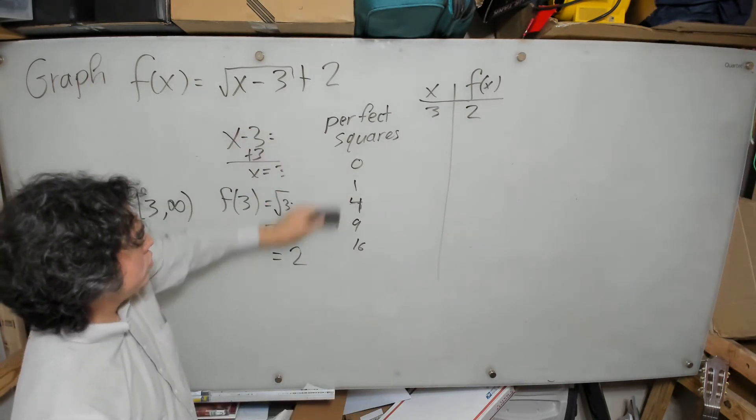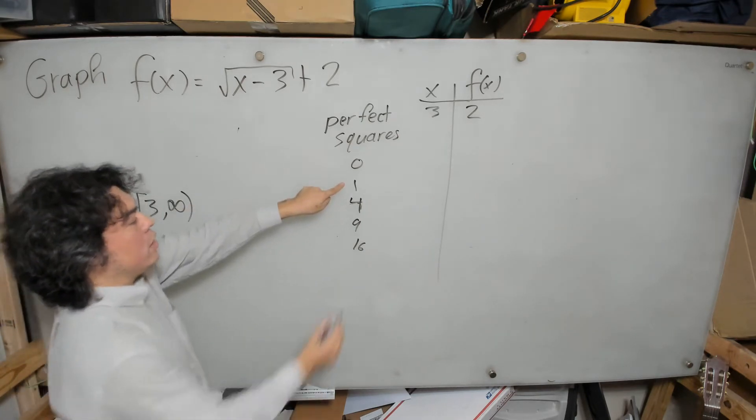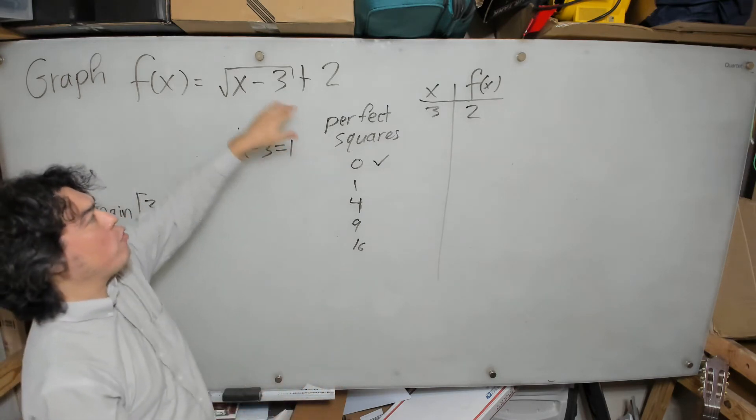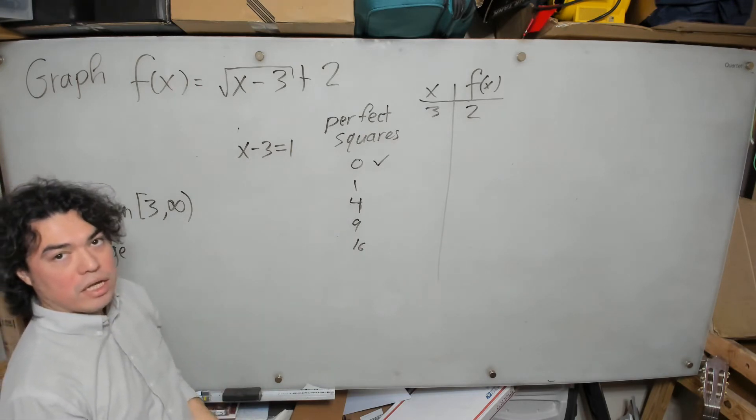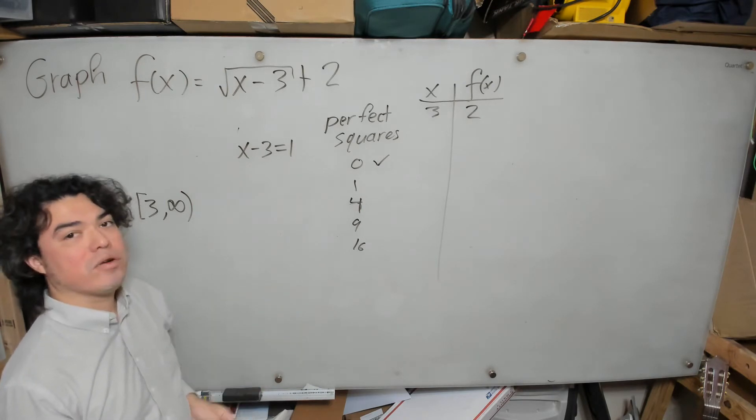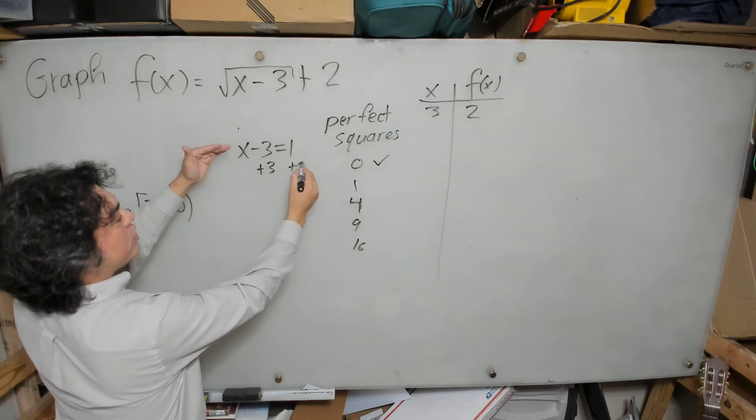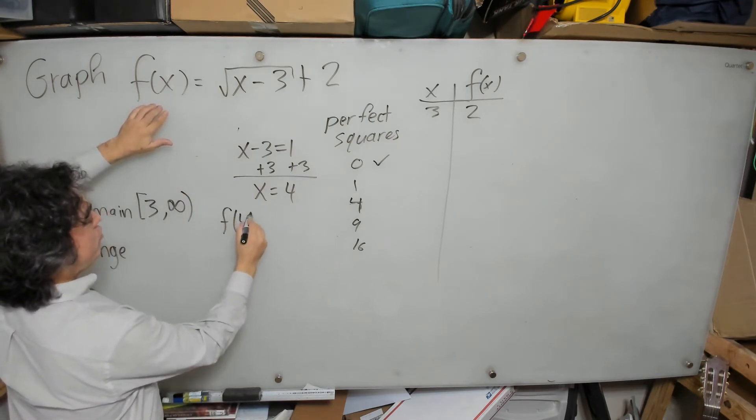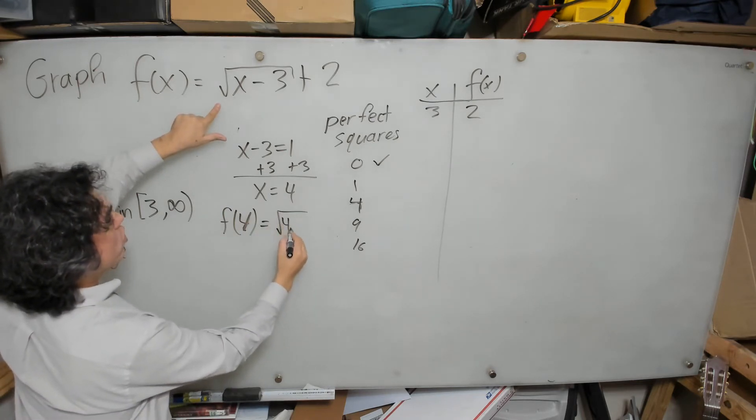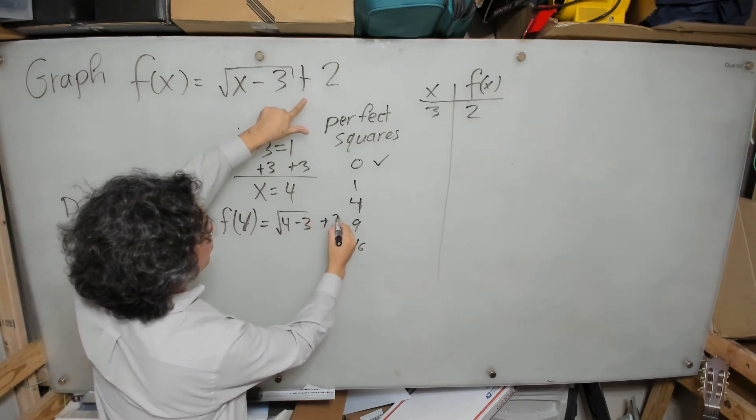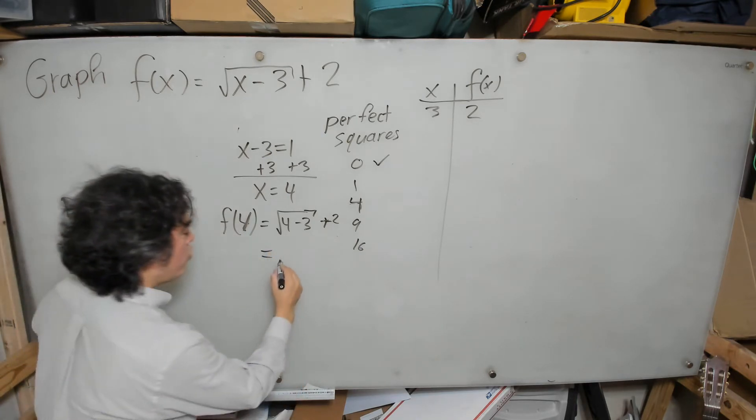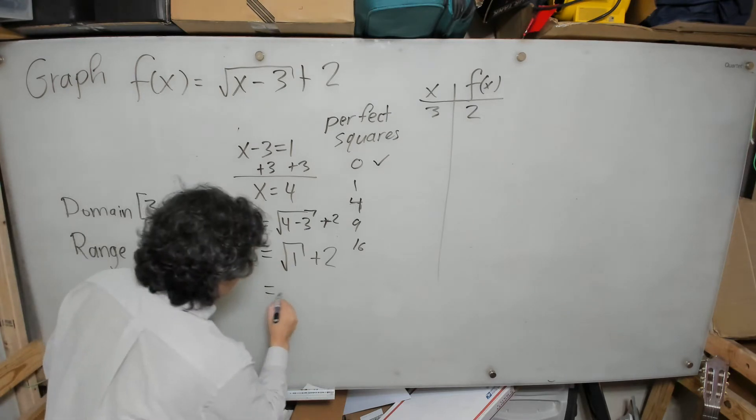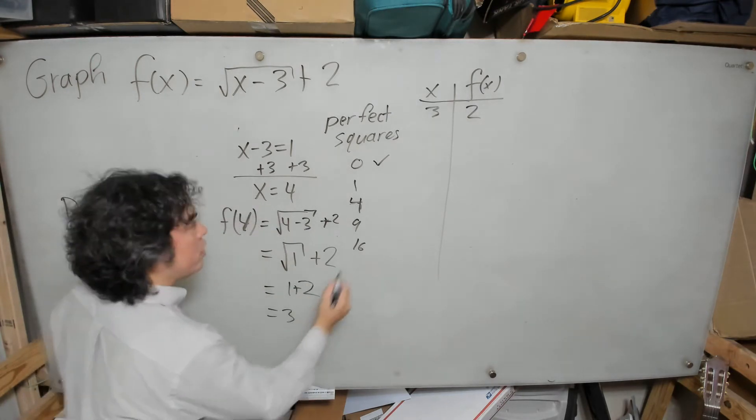Now what I'm going to do is I'm going to set the inside of the square root equal to 1. x minus 3 equal to 1. And again, why are we doing this again? Because by forcing the inside to equal perfect squares, it's going to enable us to graph this, it's going to enable us to get points that are nice to look at, that are easy to graph on a graph paper. x minus 3 equals 1 plus 3 plus 3. x equals 4. So now I'm going to evaluate my function at 4. My f at the input value of 4 will be equal to the square root of 4 minus 3 plus 2. What's 4 minus 3? That's 1. So it'll be the square root of 1 plus 2. What is the square root of 1? 1. Why? Because 1 times 1 is 1. So this will be 1 plus 2, which is 3.